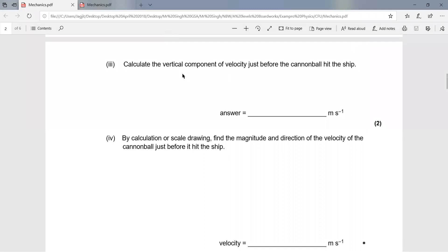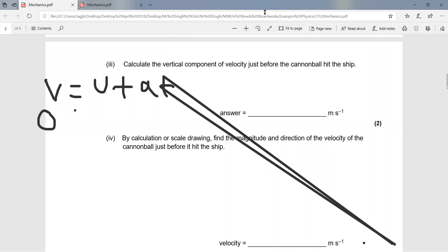This question asks us to work out the vertical component of velocity just before the cannonball hit the ship. To do this, we need to use the equation v equals u plus at, and then simply put in the figures: zero plus 9.81 times 3.7 to give us the answer of 36 meters per second.